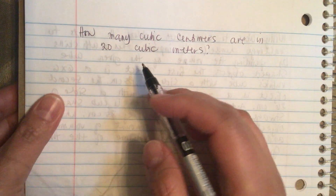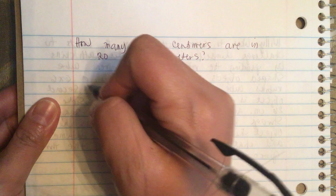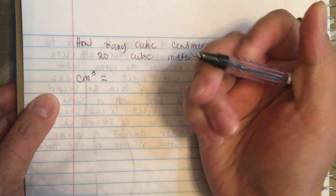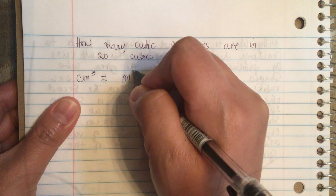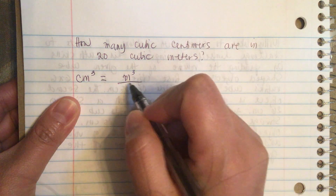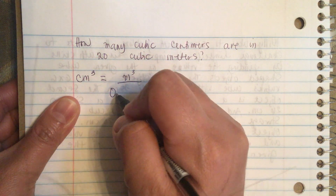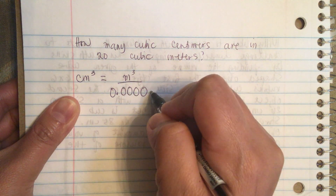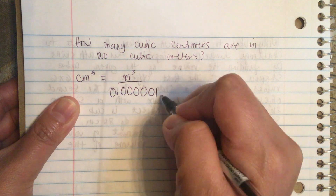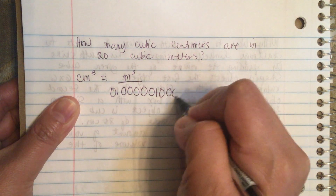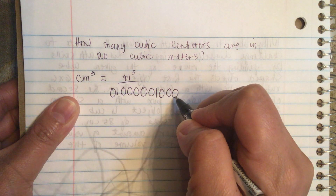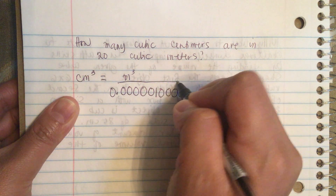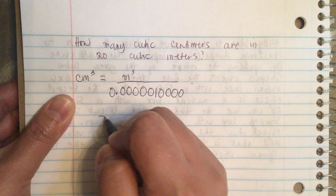The formula for cubic centimeters: cubic centimeters is equal to cubic meters divided by 0.000001.